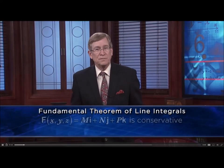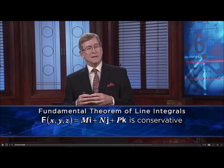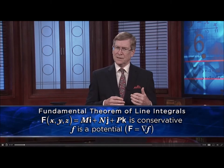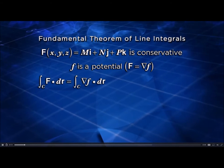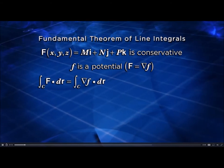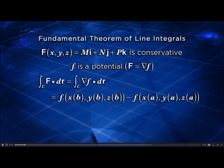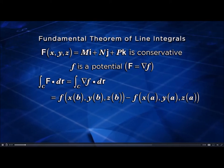We're given some conservative vector field F and a potential. Well, the line integral F dr is nothing more than take your potential and evaluate it at the end of the curve minus the value of the potential at the beginning of the curve.